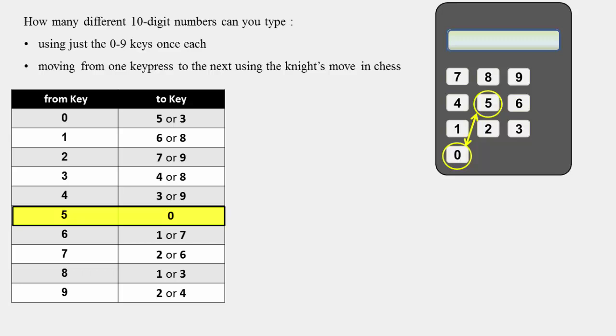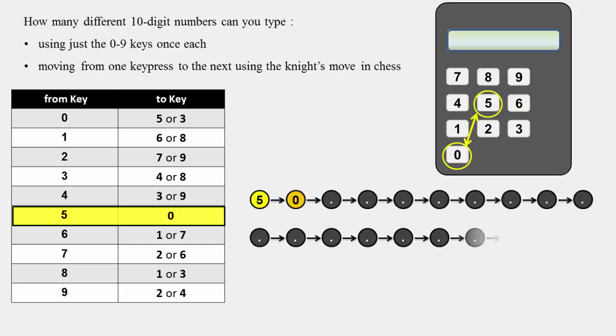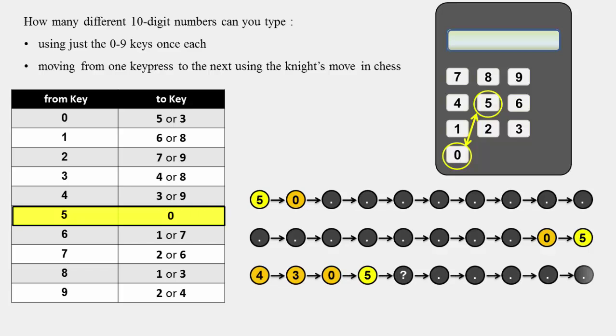And that means the expected 10-digit number must either start with 5 or end at 5. Because if the digit 5 is somewhere in between the start and end, then it won't be able to connect to any next key.